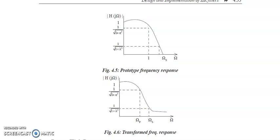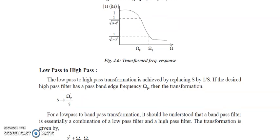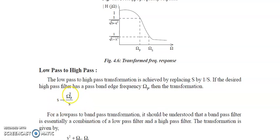This is the prototype frequency response and this is the transformed frequency response. Similarly, for low pass to high pass conversion, you again have to design a prototype filter having passband frequency of 1 radian per second. After that, apply the suitable transformation.